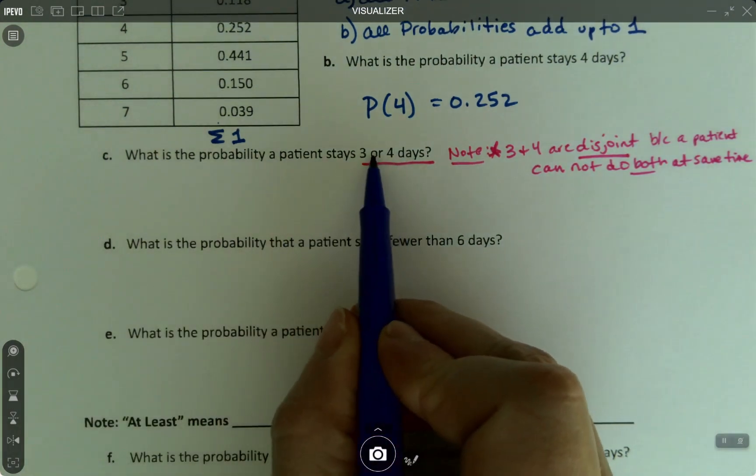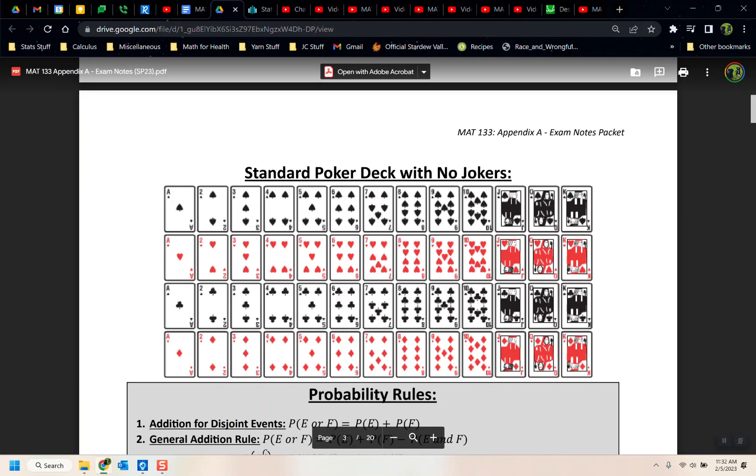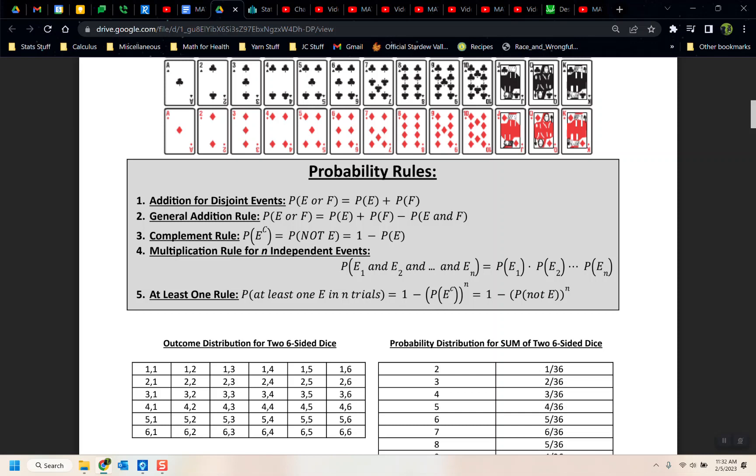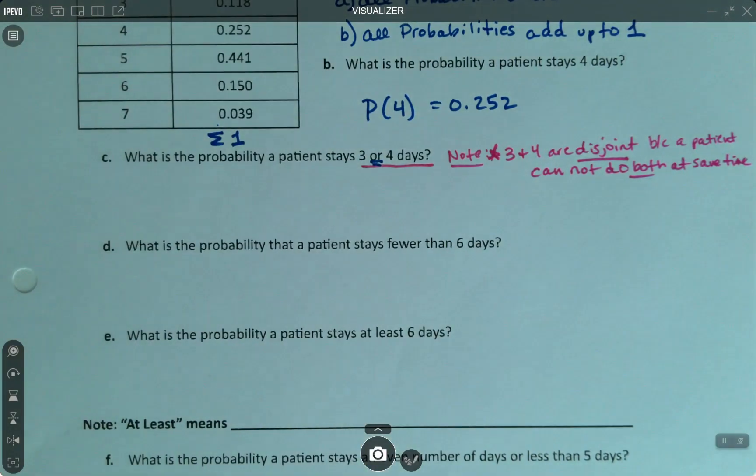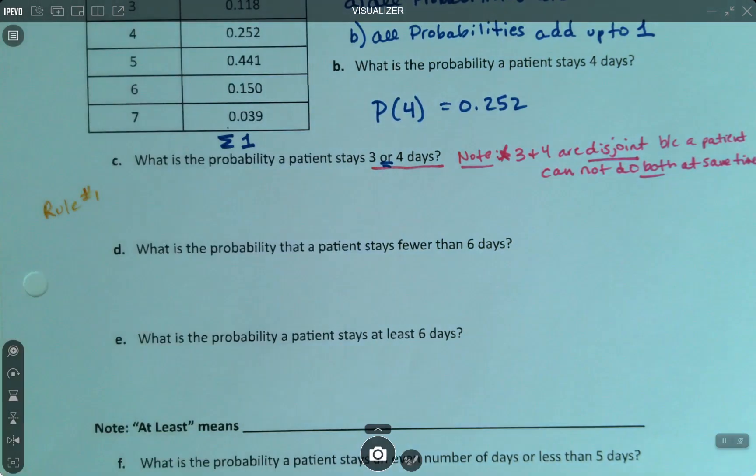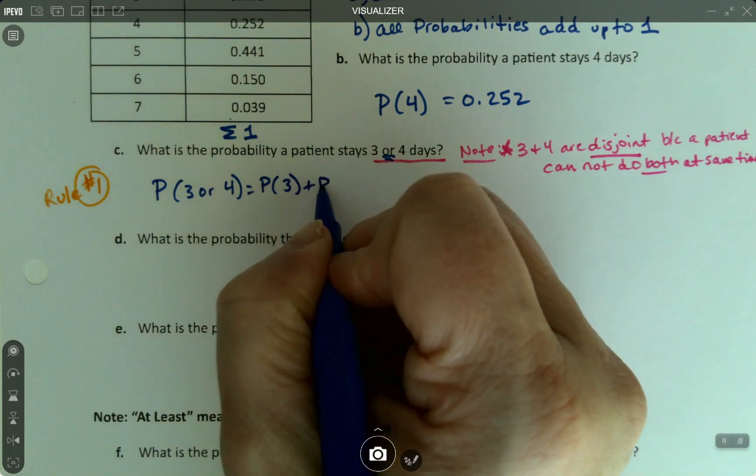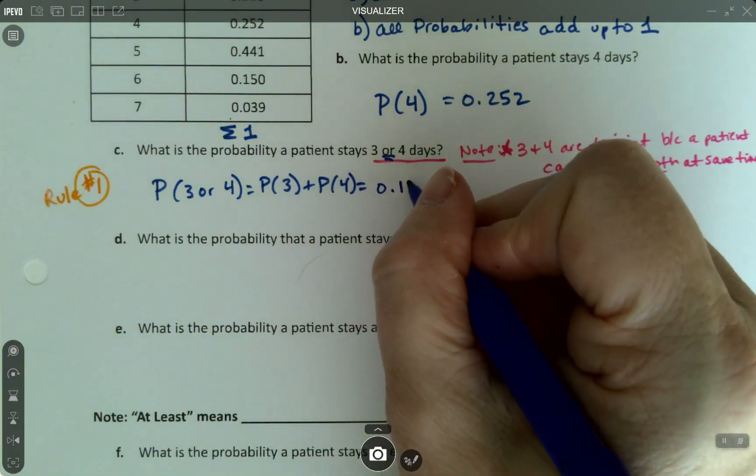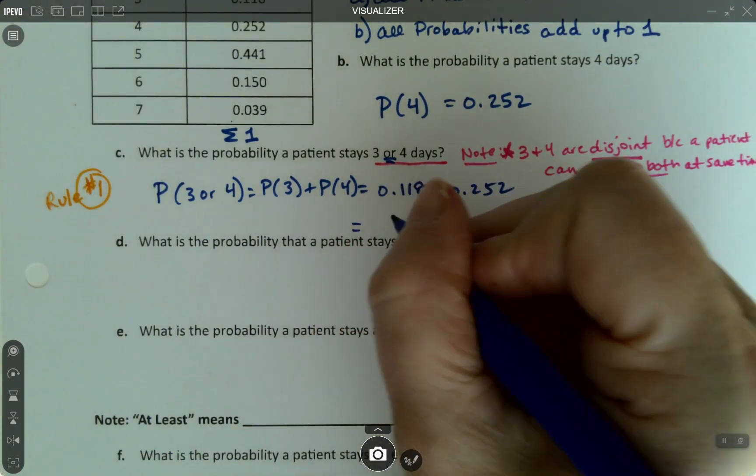Okay, so that means I want the probability of three or four. I noticed the or in there. So I want to go back and look at my probability rules. So or F, E or F, right, three or four would be either rule number one or rule number two. Since these events are disjoint, it's actually going to be rule number one. I'm just going to add. Simple as that.